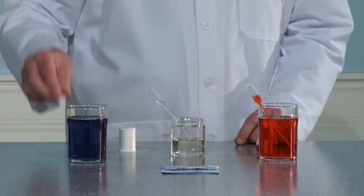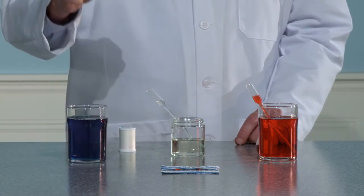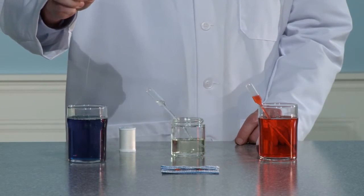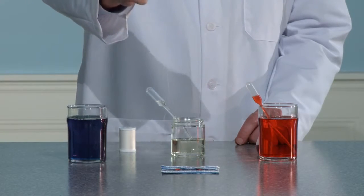Take the strand of thread and dip one end into the SA8 Liquid Laundry Detergent. Now touch the end of the string coated in detergent into one of the water drops on top of the oil.